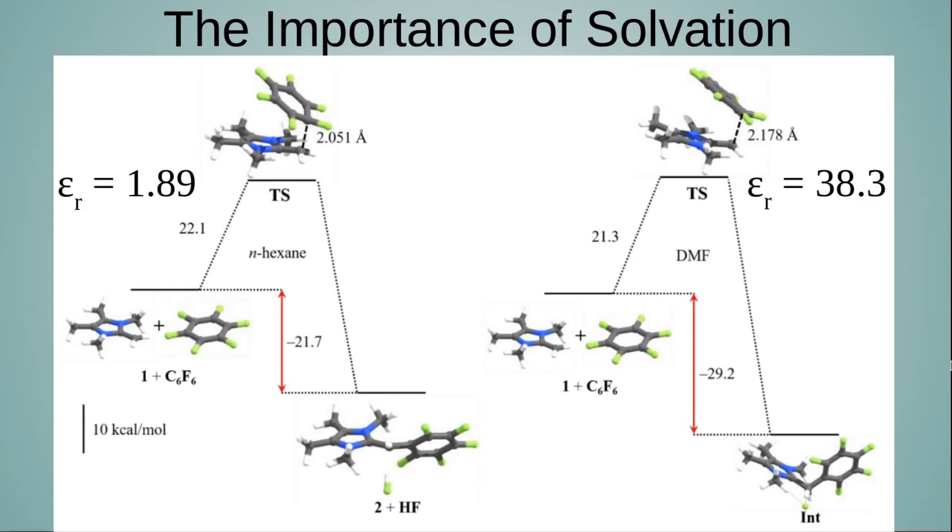On the other hand, if we use dimethylformamide as pseudosolvent, which has a much higher dielectric constant of 38.3, we saw that an intermediate was produced that is basically a protonated adduct, NHO-C6F5 adduct solvated to fluoride anion, hydrogen bonded to fluoride anion.